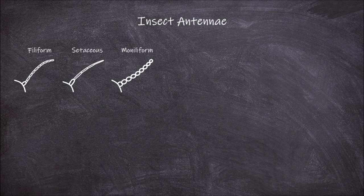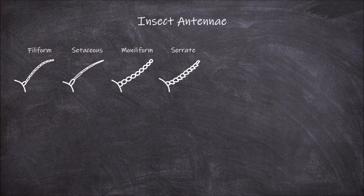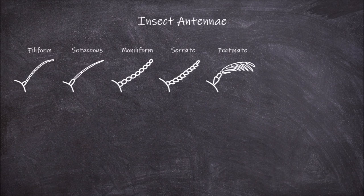In moniliform antennae, the segments of the flagellum are rounded and appear like a string of beads. In serrate antennae, the segments of the flagellum are angled on one side, which gives it a saw-like appearance. In pectinate antennae, the segments are elongated on one side and appear comb-like.